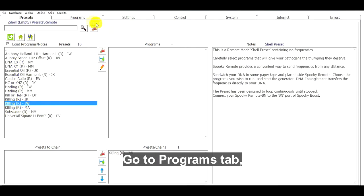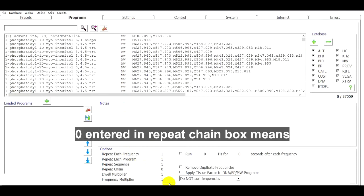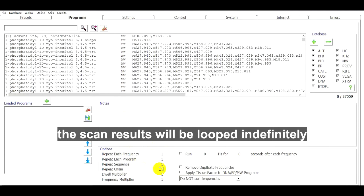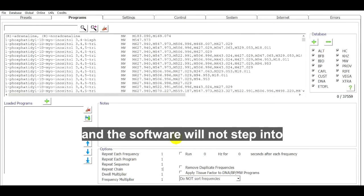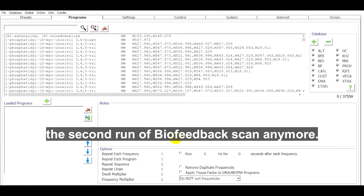Go to the Programs tab and ensure all repeat settings are set to 1. Zero entered in the repeat chain box means the scan results will be looped indefinitely and the software will not step into the second run of biofeedback scan anymore.